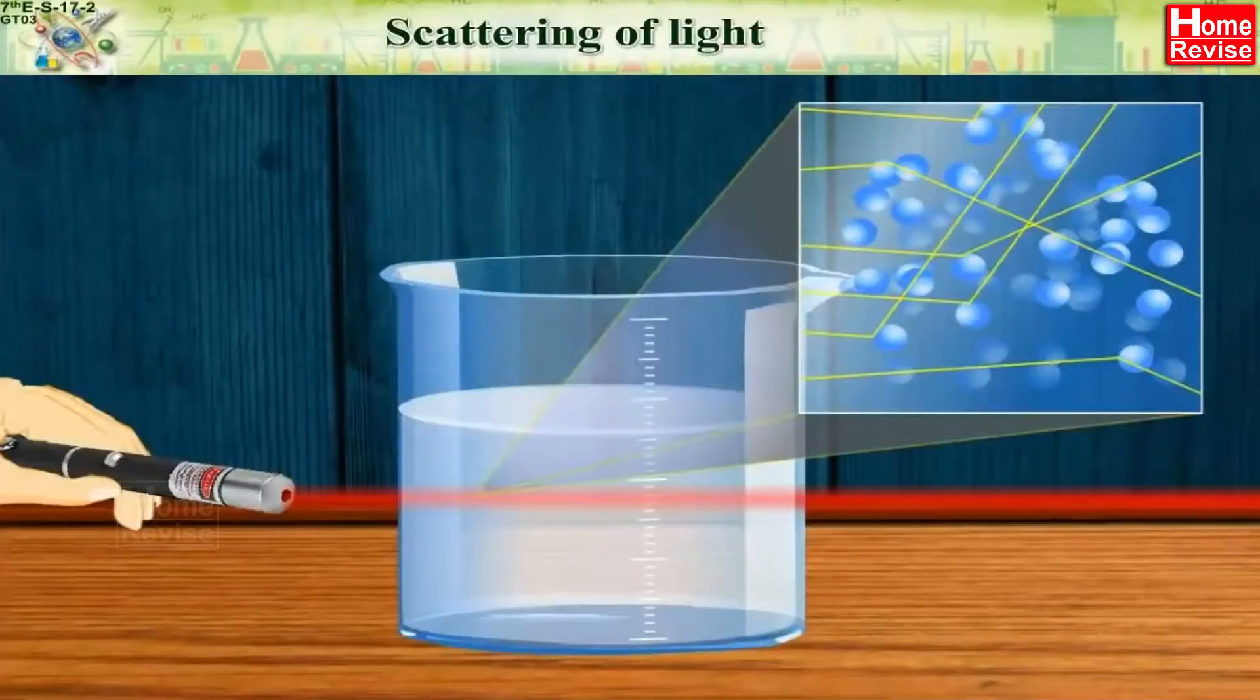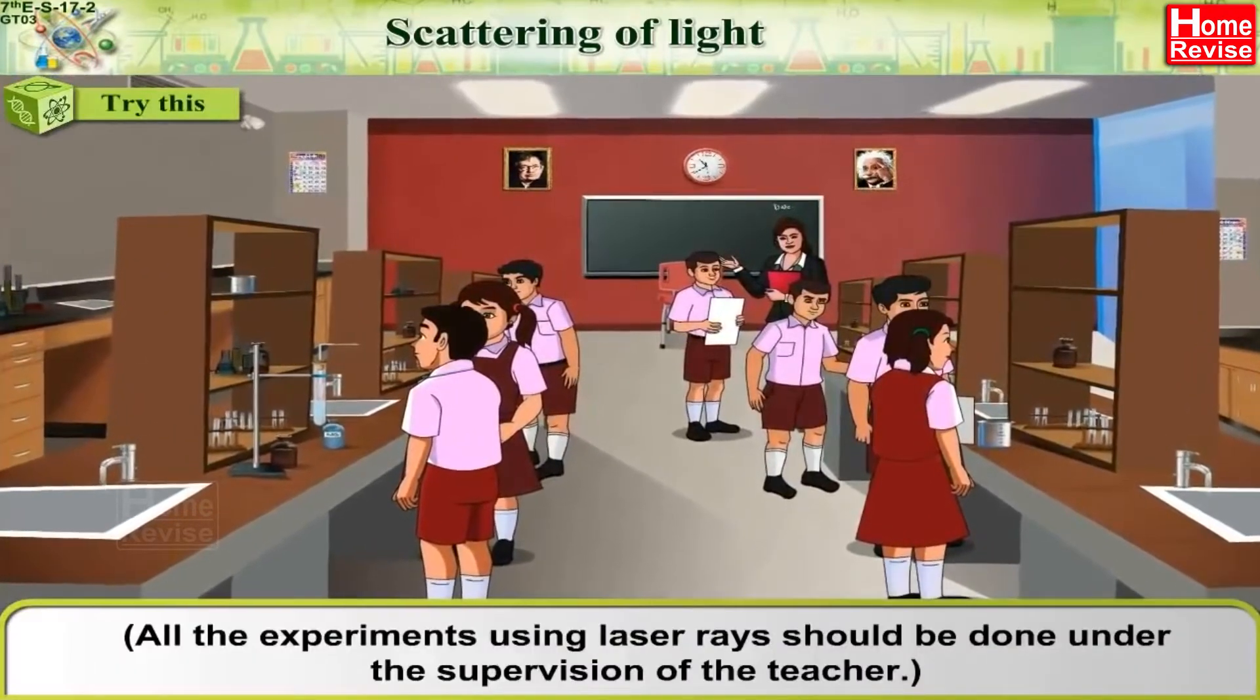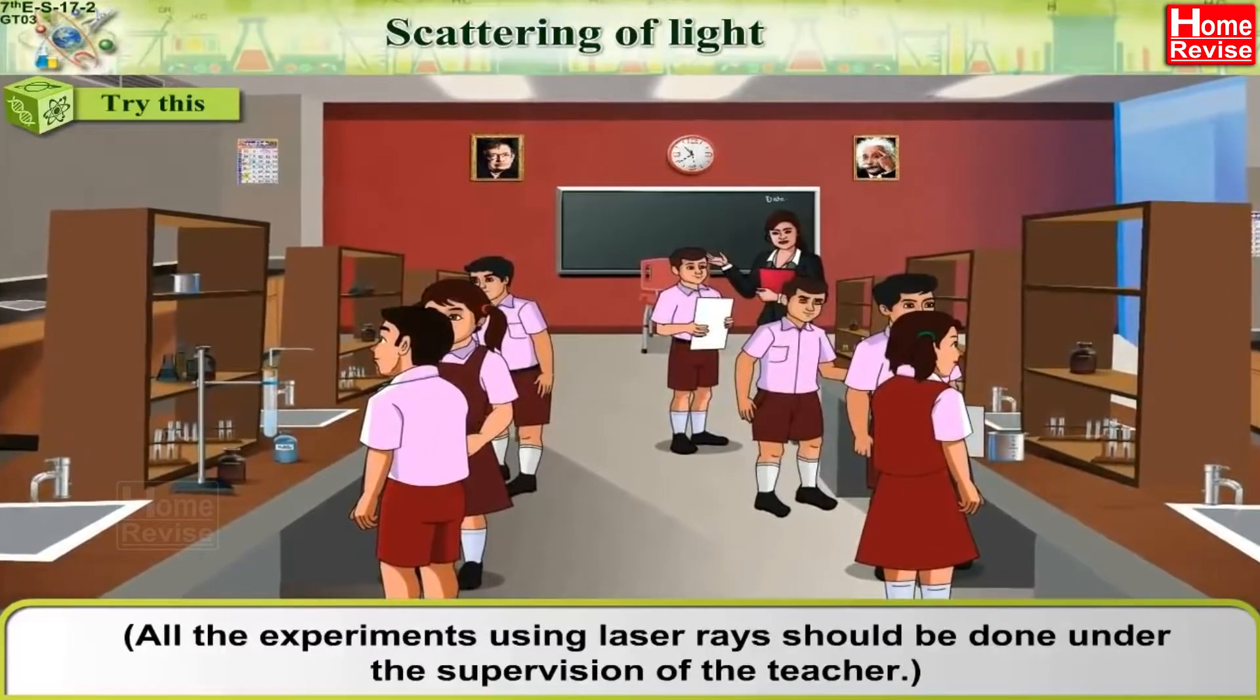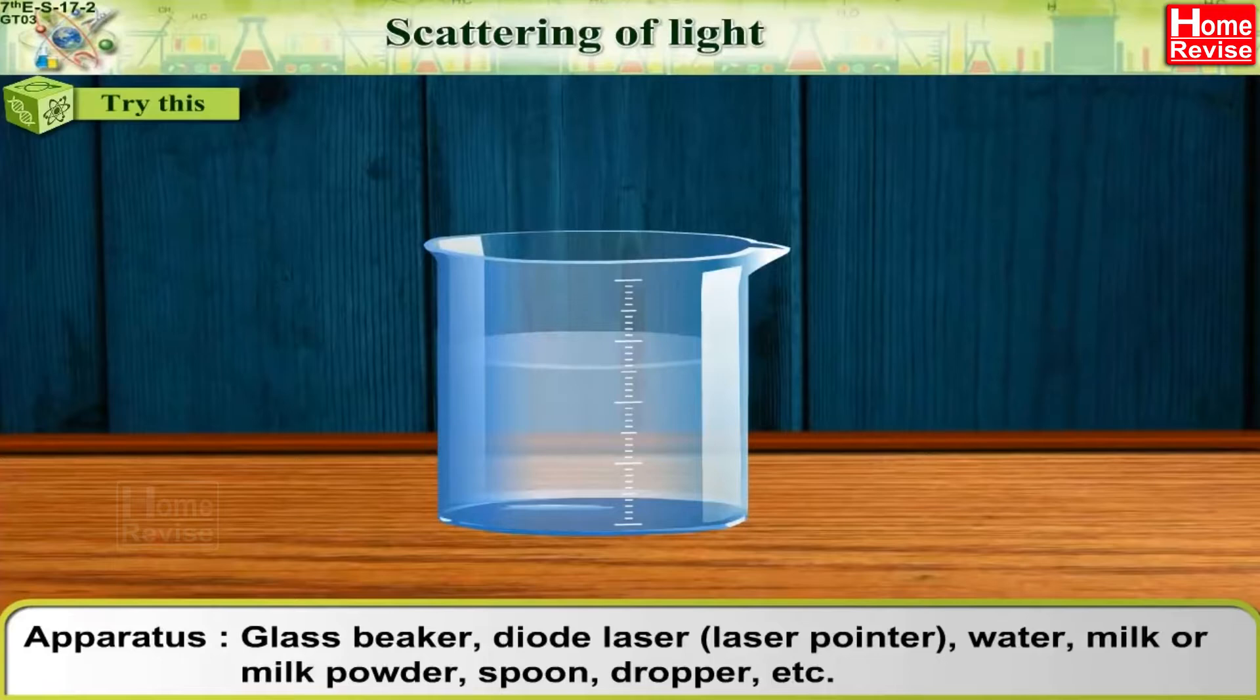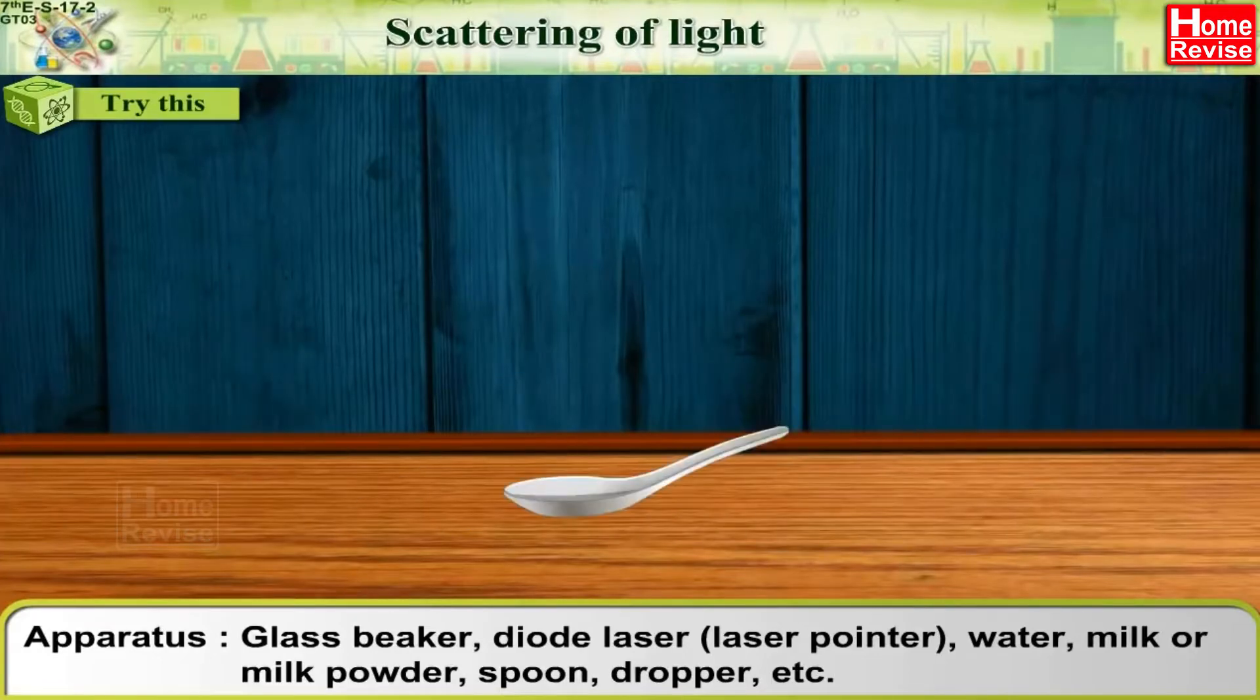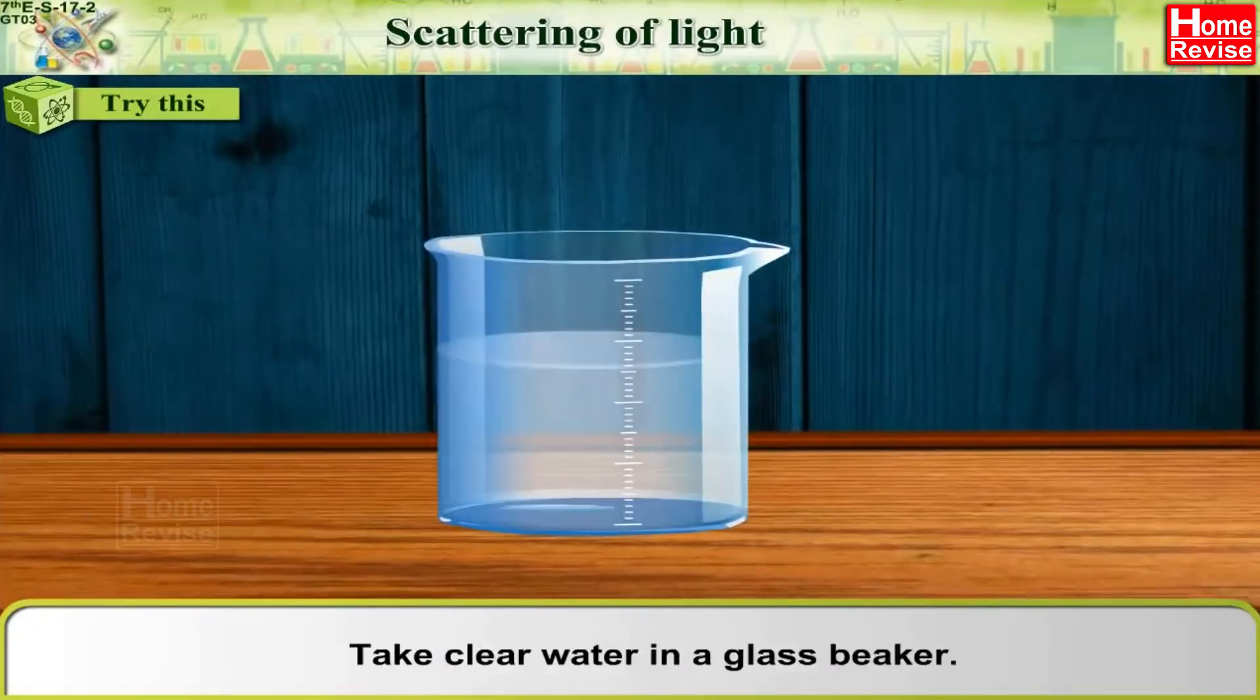Scattering of light. Try this. All the experiments using laser rays should be done under the supervision of the teacher. Apparatus: glass beaker, diode laser (laser pointer), water, milk or milk powder, spoon, dropper, etc. Procedure: take clear water in a glass beaker.